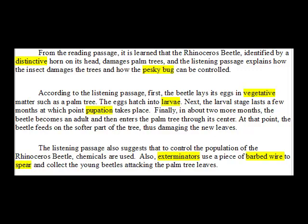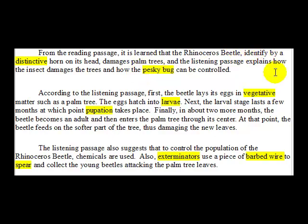Let's take a look at some minor systematic errors that might be noticeable but don't require much listener effort and don't obscure meaning. For example, if you said 'it is learn that the rhinoceros beetle' and 'identify by distinctive horn on its head, damage palm trees' — using incorrect passive forms — the meaning is still there. It doesn't require too much effort to understand the idea. So these are minor systematic errors you might make when speaking, but they don't cause a lot of problems in your ability to communicate.